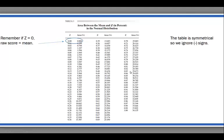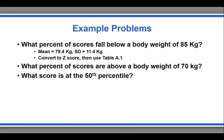Adding the 50% of scores that exist above the mean, we get roughly 79.4% of the scores are higher than a raw score of 70 kilograms. And finally — hopefully this one is easy — what score is at the 50th percentile? Well, in a normal distribution, the 50th percentile exists at the mean. So a raw score of 79.4 is the score at the 50th percentile.